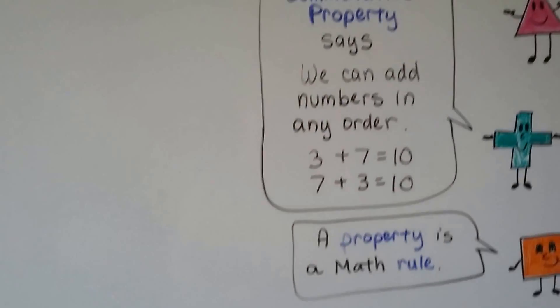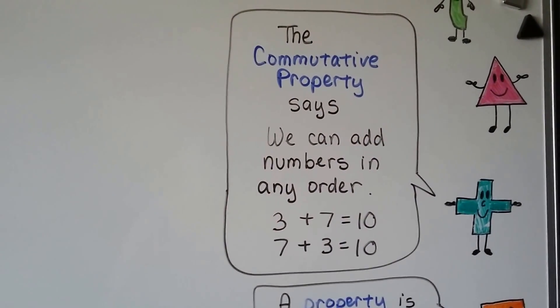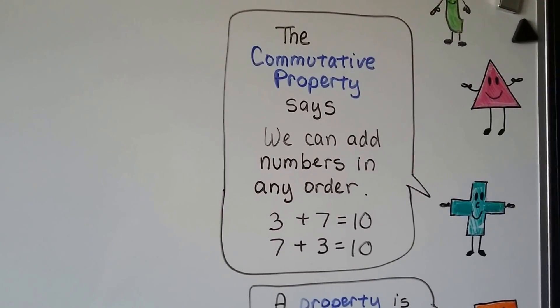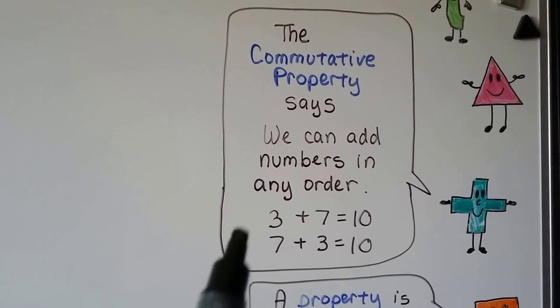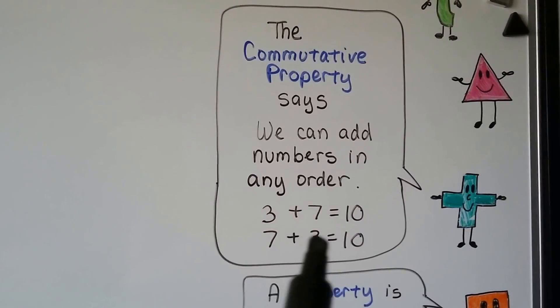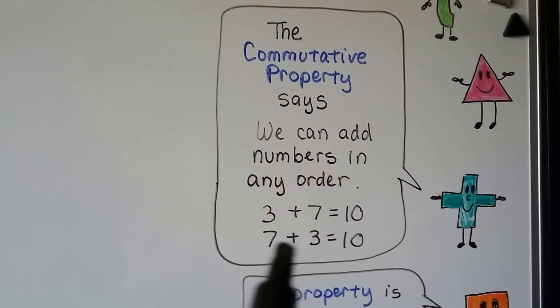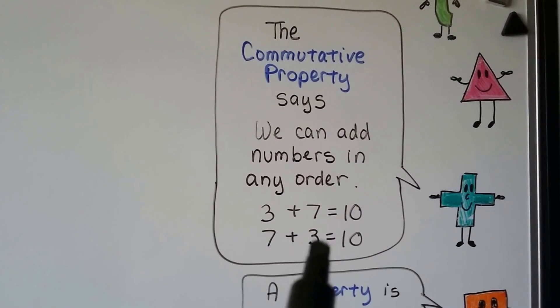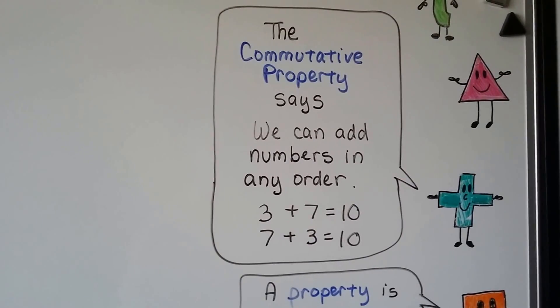Do you remember from the previous video? The commutative property says that we can add numbers in any order. We can add 3 plus 7 and it'll equal 10, and we can add 7 plus 3 and it'll equal 10. It doesn't matter if we switch them around or which one's first. It's still going to equal 10.